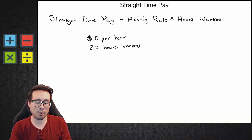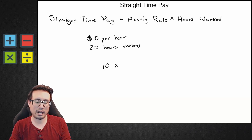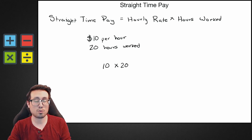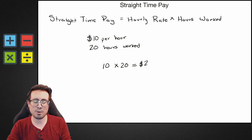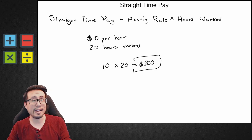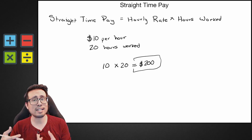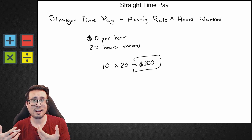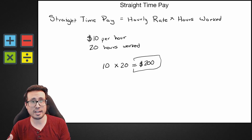We take our hourly rate — how much we make per hour, which is ten dollars — and multiply it times the number of hours worked, which is 20. So 10 times 20 gives you 200. Our straight time pay is $200. That's not what goes in the bank account — taxes and deductions still come out — but this is our gross straight time pay.